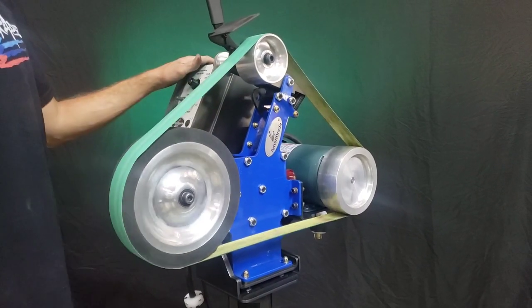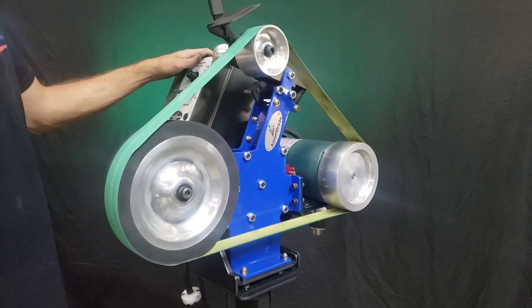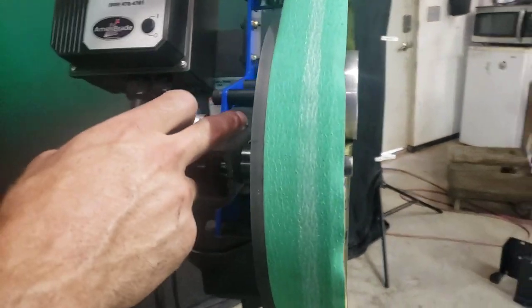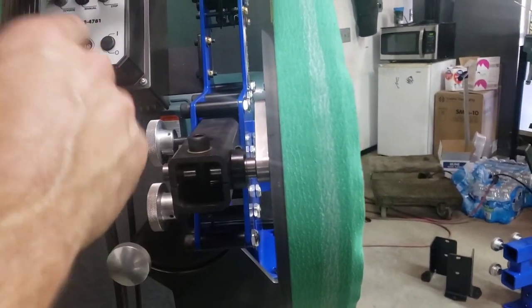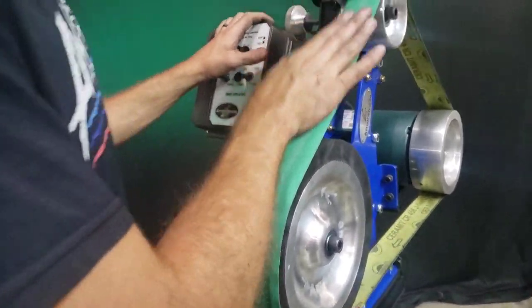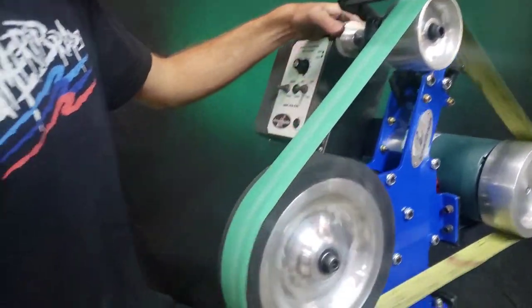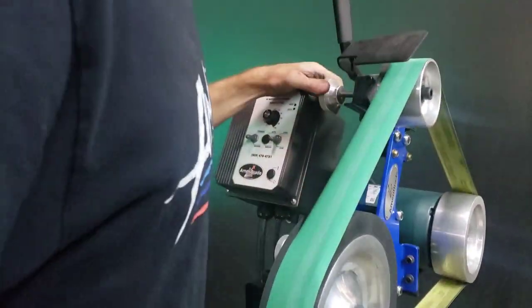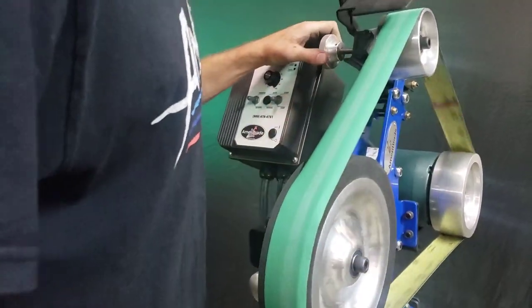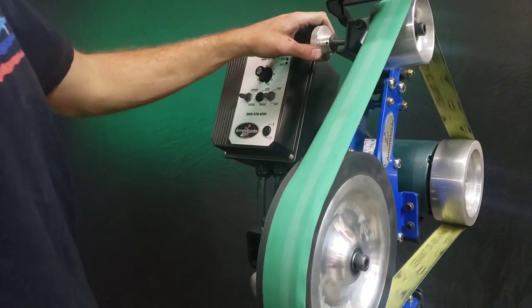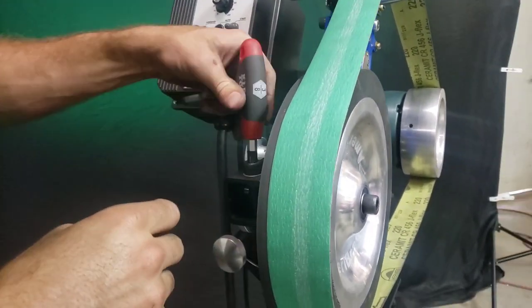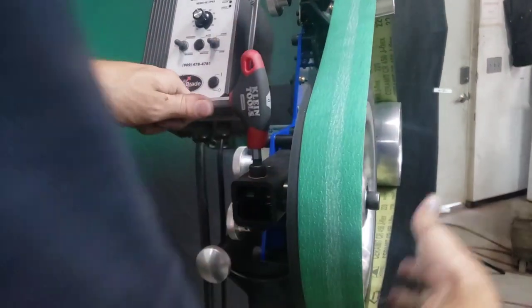And then, any time you change a setup, always spin the belt by hand to make sure that it's tracking correctly before you fire it up. I purposefully misaligned this contact wheel with the spindle to show you the next step in setting up your tracking on a new accessory. So, I'll spin the belt forward and I'll adjust my tracking wheel until my belt is centered on the tracking wheel. And then, I'll see how far off it is here and I'll slide my spindle out that amount.